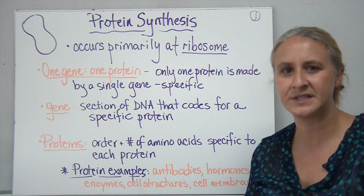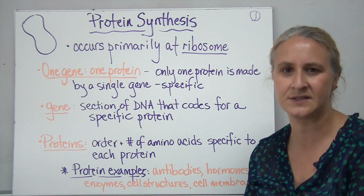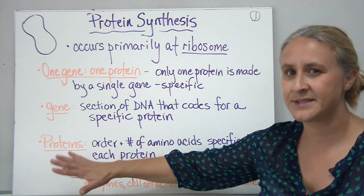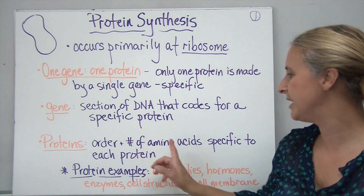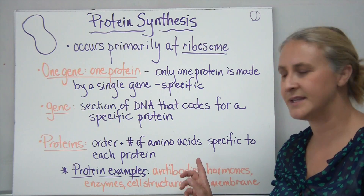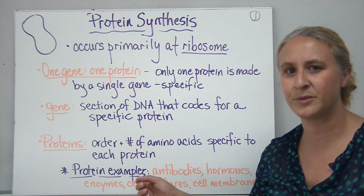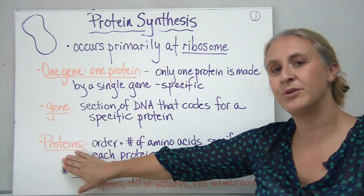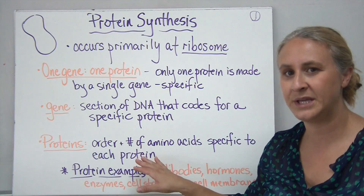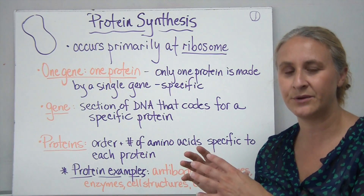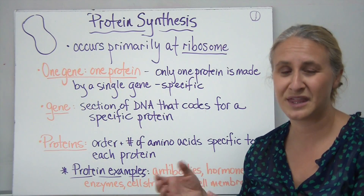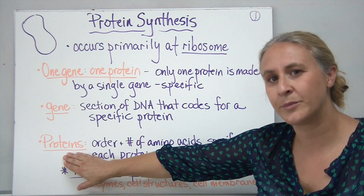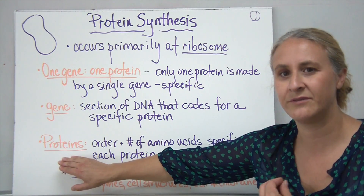A gene is really just a section of DNA that codes for a specific protein — it's just a series of those letters we've discussed before: A's, T's, G's, and C's, in a specific region on a chromosome. In terms of proteins, the order and number of amino acids used to make up the protein are specific for each protein. The building blocks of a protein are amino acids, and we put several — sometimes thousands — of amino acids together to make a protein, which is a long chain of amino acids.